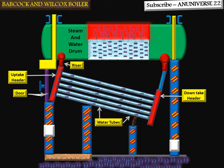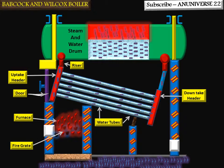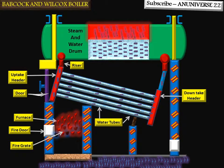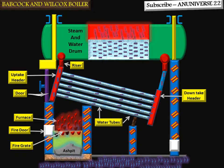Below the uptake header, the furnace of the boiler is arranged, and coal is fed to the grate through the fire door. The furnace is the place where fuel burns and the grate is the place where fuel is placed. Ash formed during burning is collected in the ash pit. The wall breeze deflector deflects the combustion or flue gases upward.